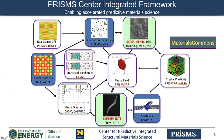Before I get into PRISMS-PF, I would like to give a brief overview of the PRISM Center integrated framework, which has the goal of enabling accelerated predictive material science as part of the Materials Genome Initiative. The approach is to establish a framework comprised of multi-scaled open source software, along with experiments, integration protocols, and the Materials Commons information repository, which facilitates data sharing and collaboration.